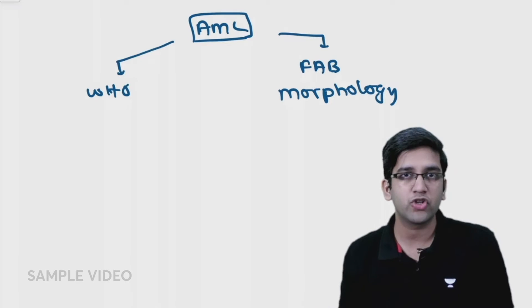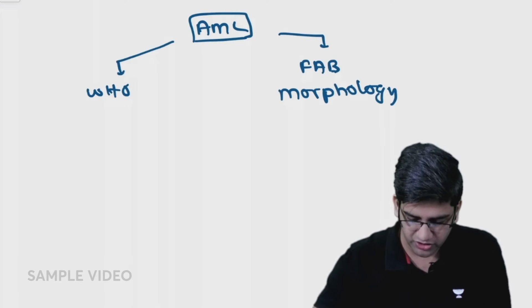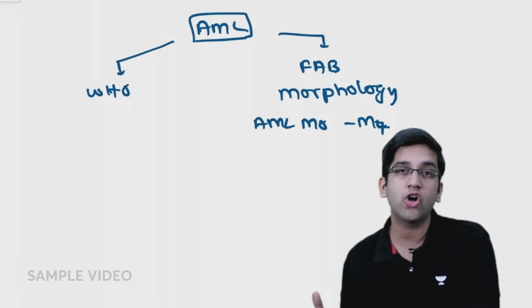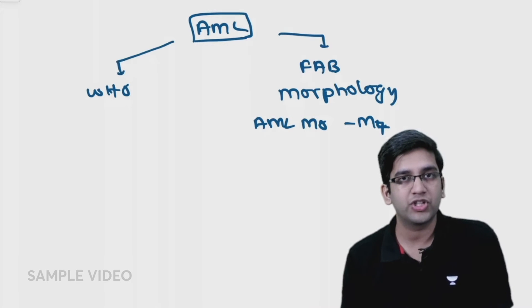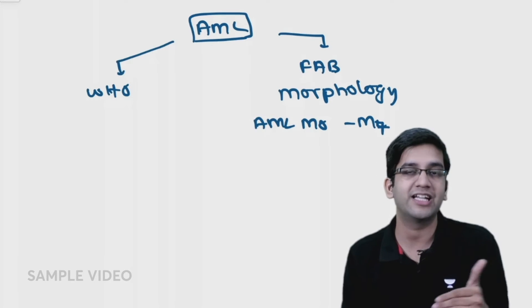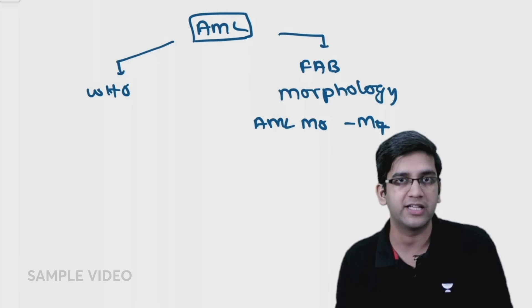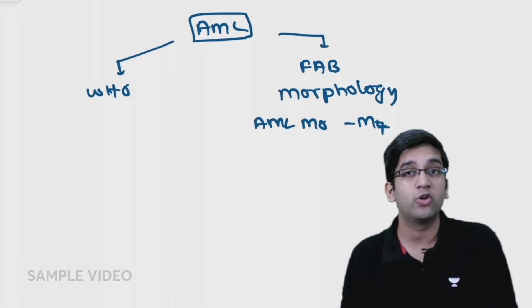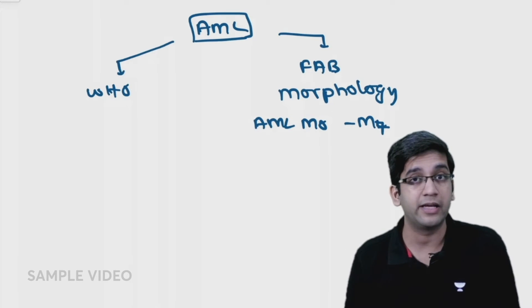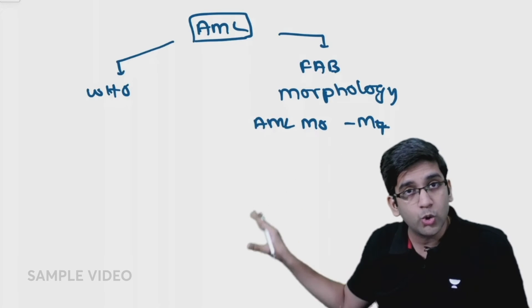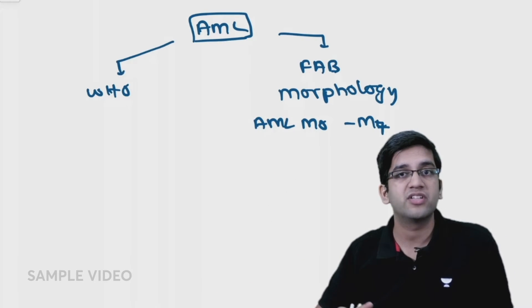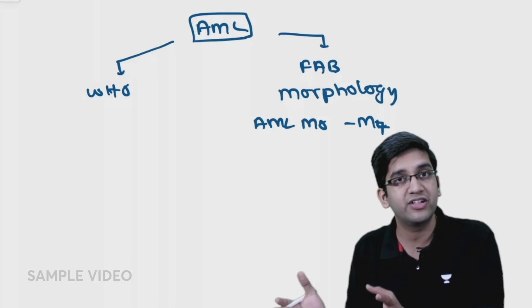FAB is French-American-British classification, which is a morphological classification. In this morphological classification, we have AML M0 to AML M7. This was the only classification for long years. Then WHO came and changed the classification based on genetics and etiology. I have multiple groups.